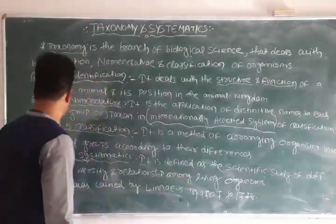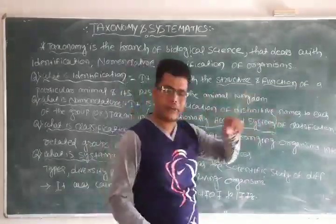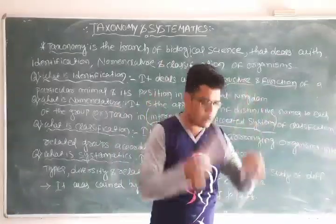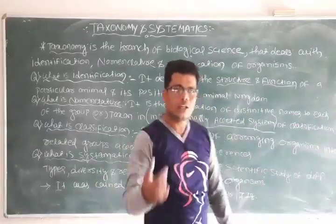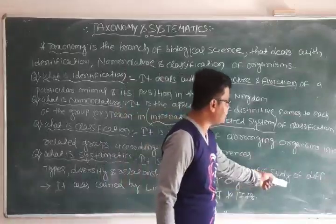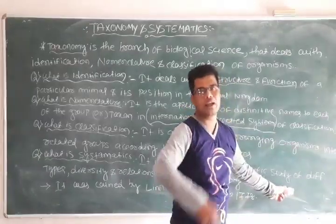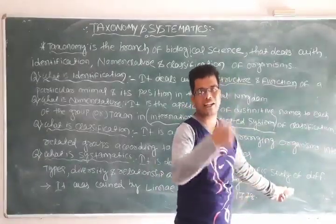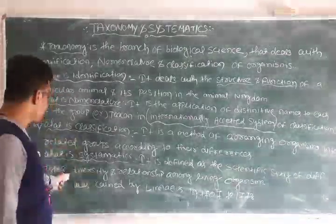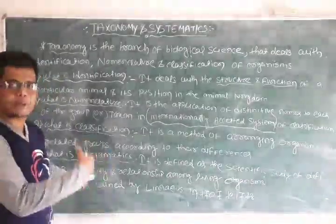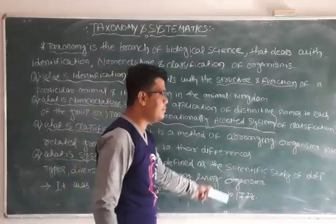Systematics is defined as the scientific study of organisms — including their morphology (external structure) and anatomy (internal structure). It is the total scientific study of the diversity of different forms of life and the relationship among living organisms. For example, the relationship between humans and domestic animals, or between humans and plants — these are studied under systematics.